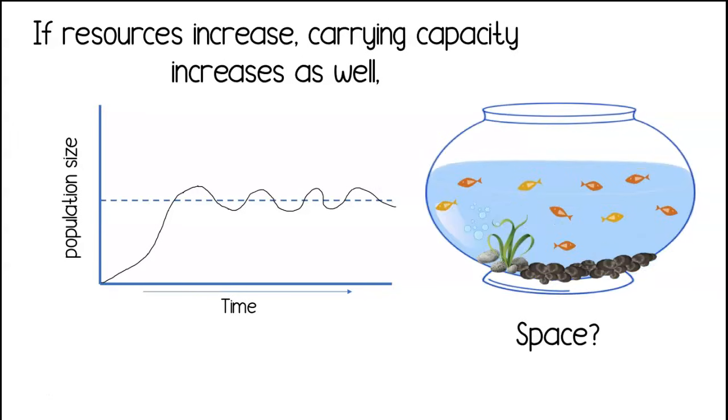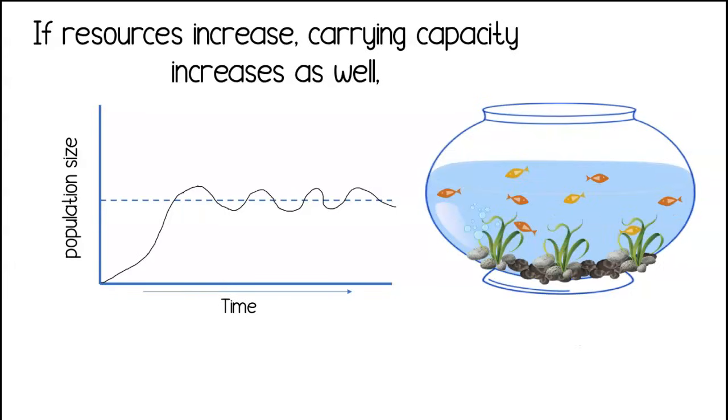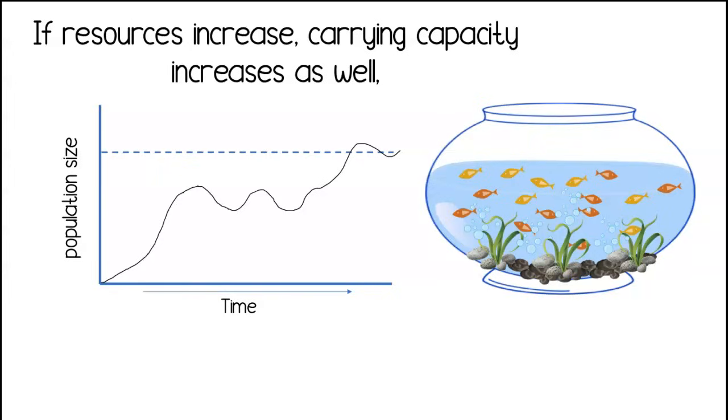But in our fishbowl, it wasn't a matter of space. It was more likely the amount of oxygen that limited the growth of the fish population. If we add more plants, they'll produce more oxygen. And if there's more oxygen in the fishbowl, the carrying capacity can increase, we can support more fish. If the carrying capacity increases, the population will increase as well.